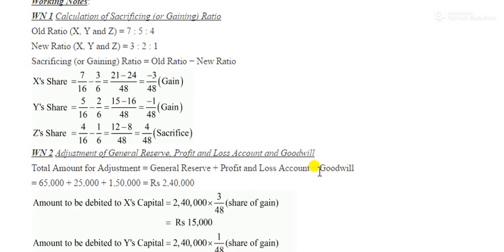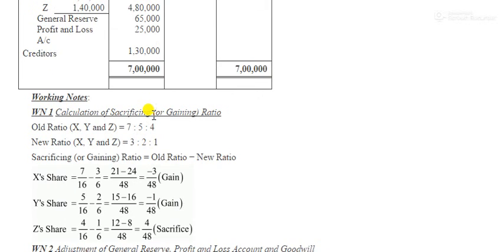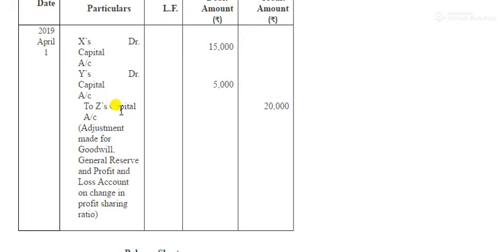We then do the total of journal of profit and loss minus goodwill — please do a correction here: it is plus, not minus. So ₹65,000 plus ₹25,000 plus ₹1,50,000 equals ₹2,40,000. In all three cases the entry passed is gaining to sacrifice. We multiply ₹2,40,000 with each partner's gain and sacrifice ratio, giving amounts of ₹15,000, ₹5,000, and ₹20,000. The journal entry is: X Debit, Y Debit to Z Capital — ₹15,000, ₹5,000, and ₹20,000.